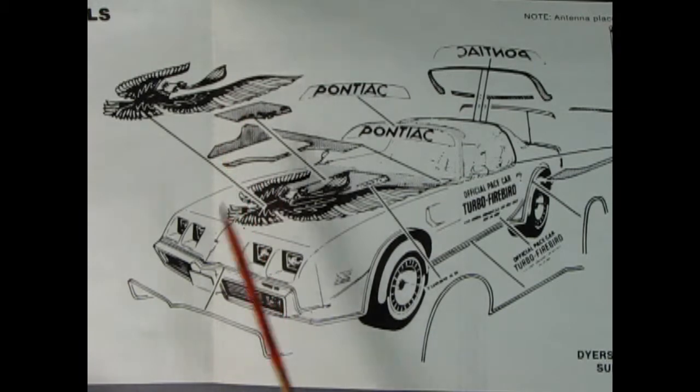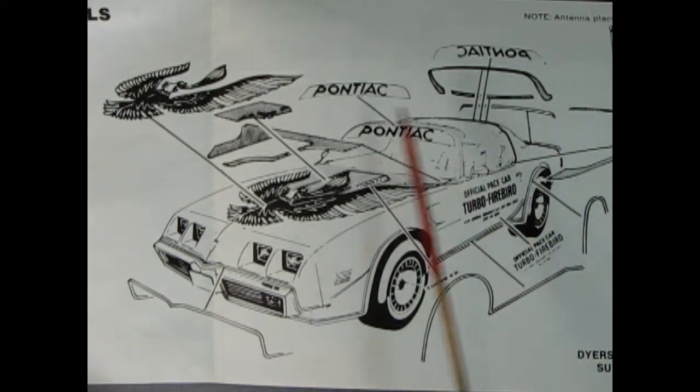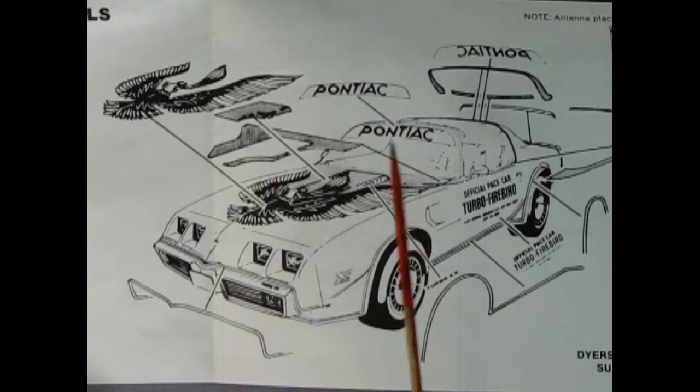Finally, panel 15 is the decal placement for both the stock and the pace car. You would of course use the official pace car letters on the side if you're building the pace car, but all the rest would be for stock. And this is just really cool too. The Pontiac visors on the windows.